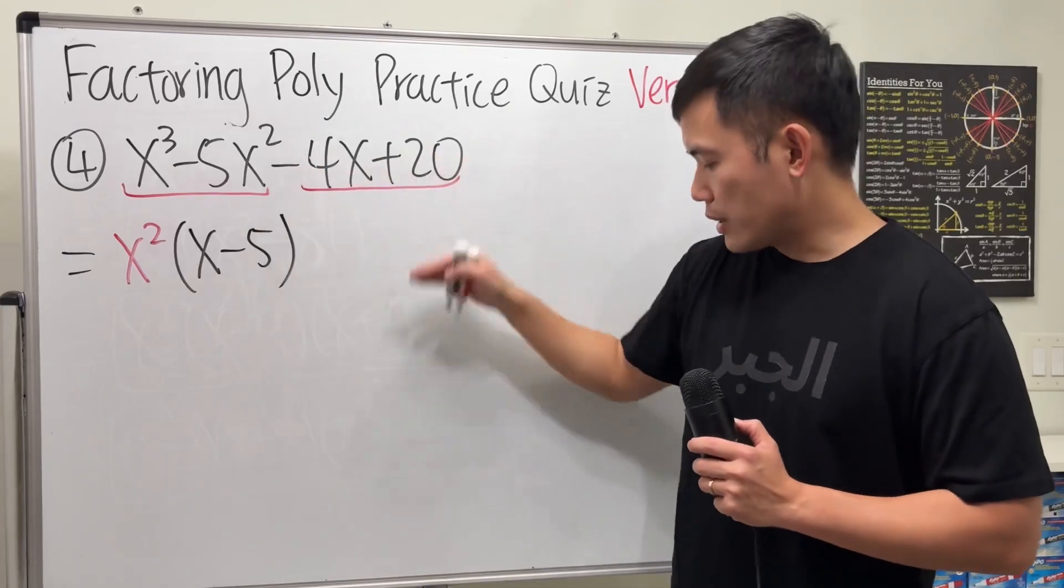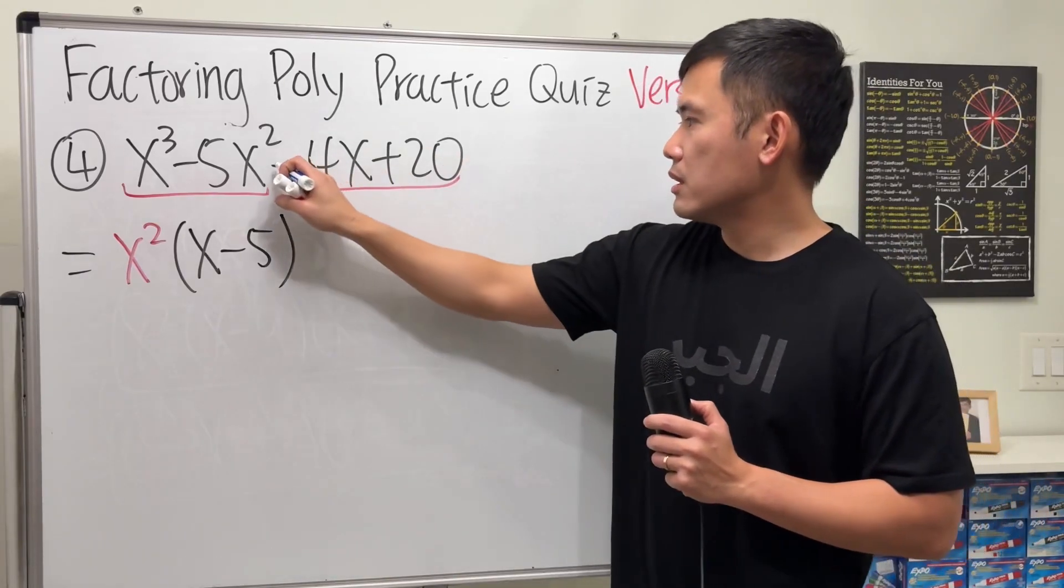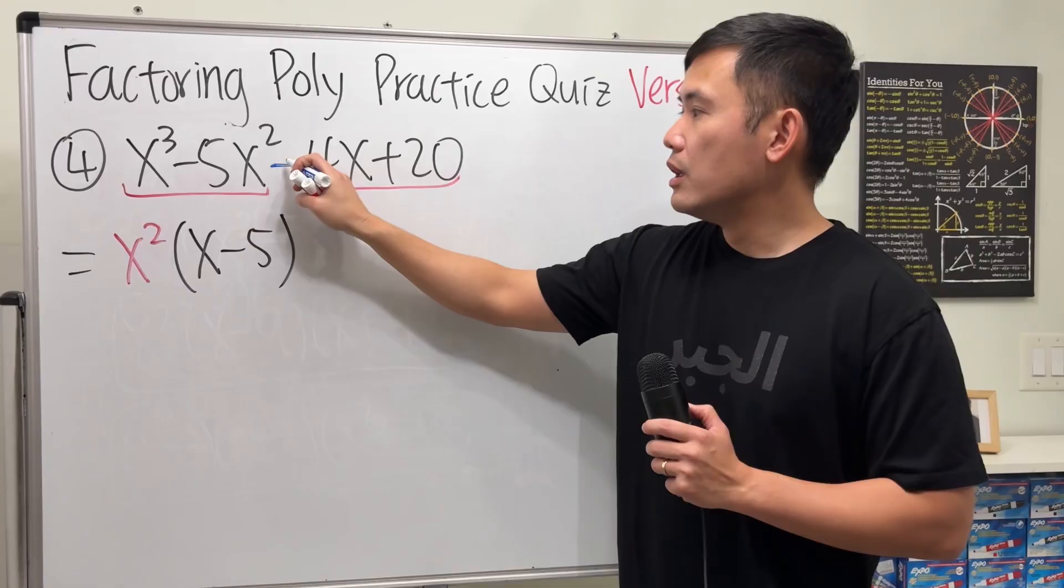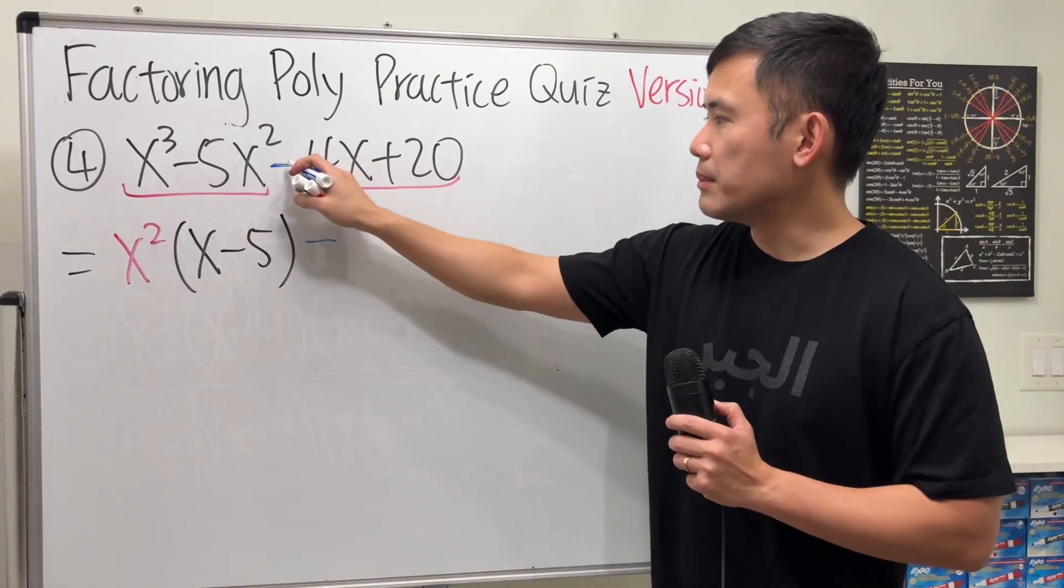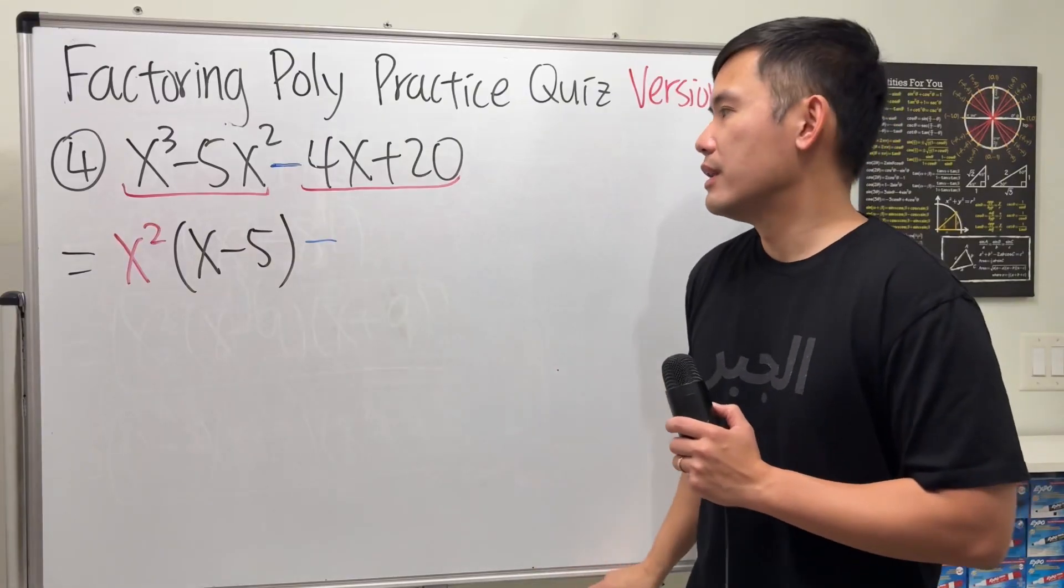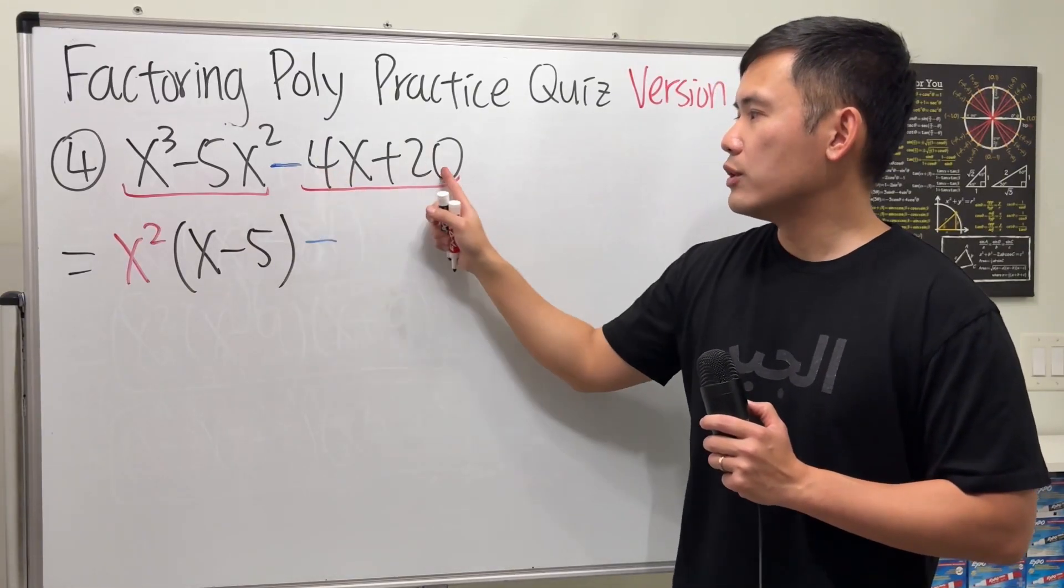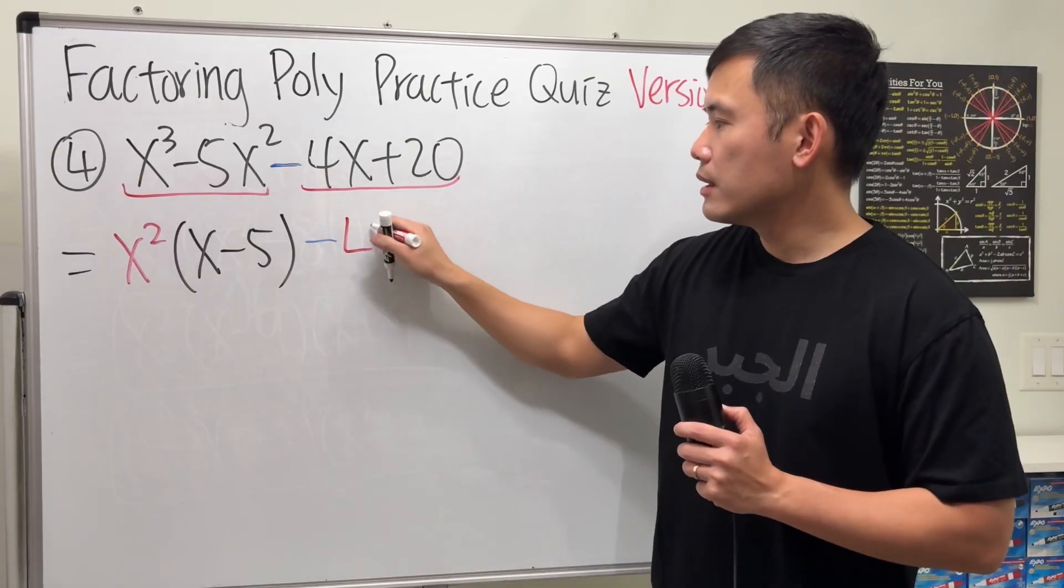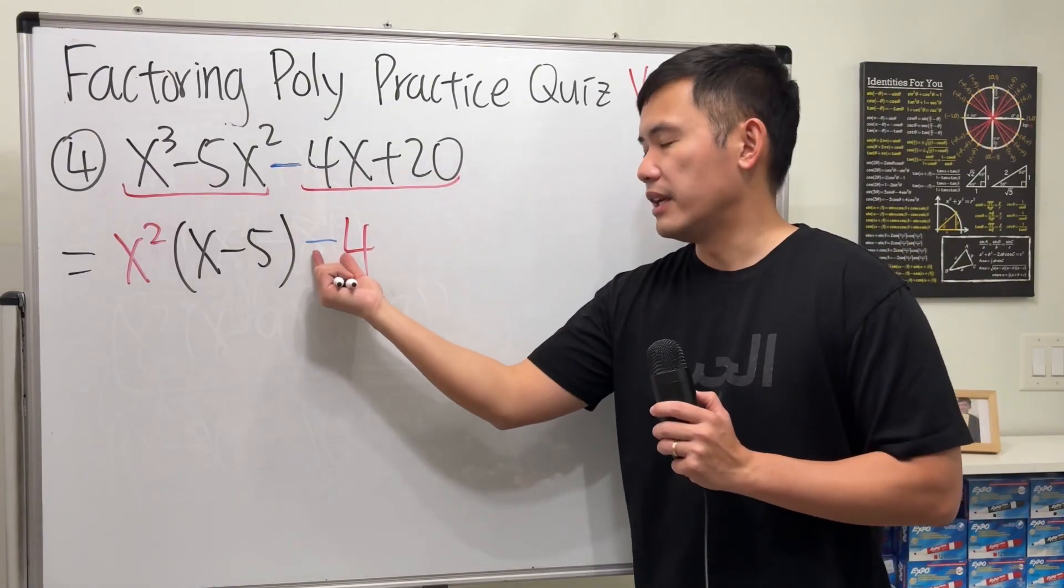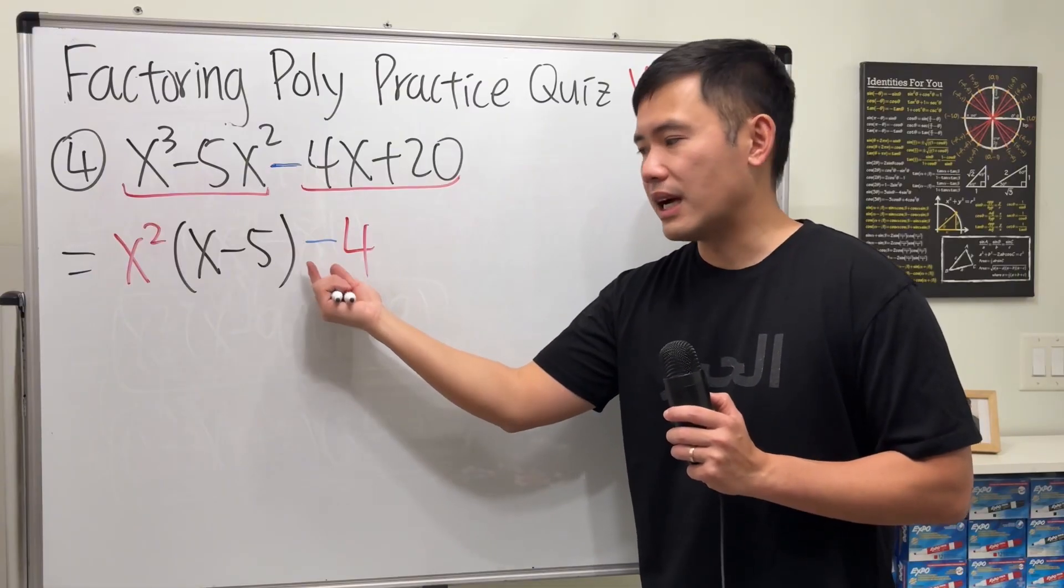Now, for these right here, it's a little bit trickier. Here we have a minus. Whatever this sign is, go ahead and write it down. It's a minus, just write it down. Now look at the numbers, 4 and 20, we can factor out a common number 4, right? So what we are really factoring out is negative 4. Be really careful with that.